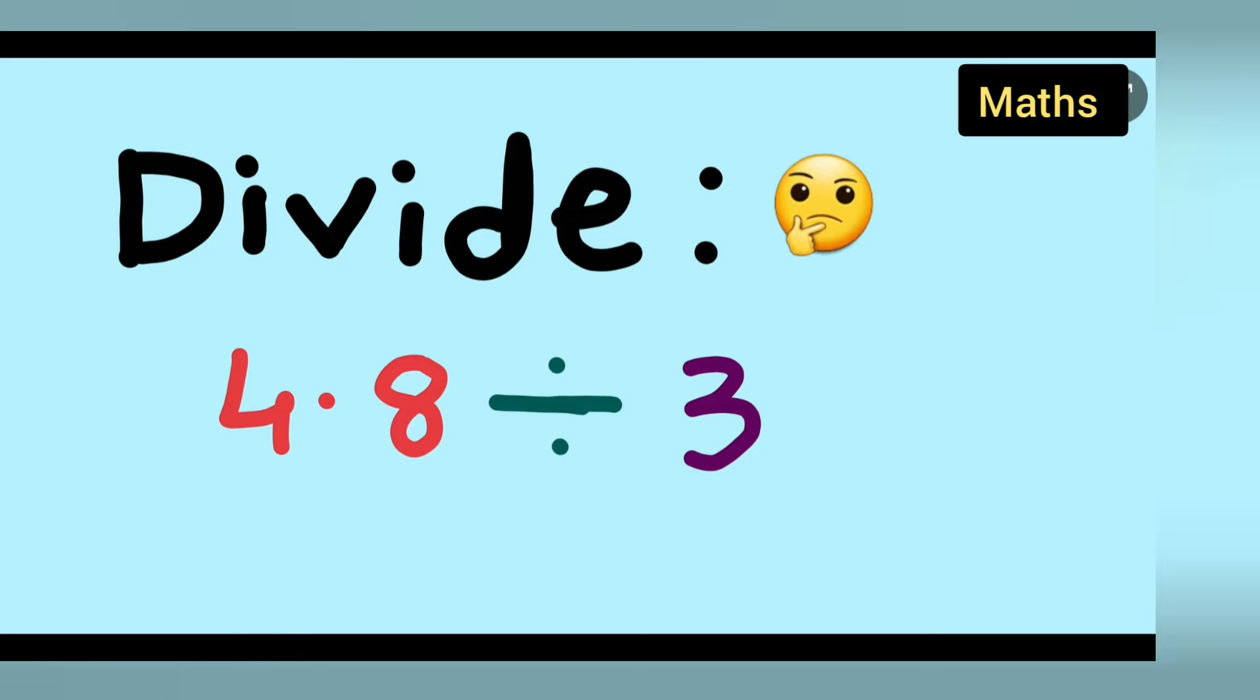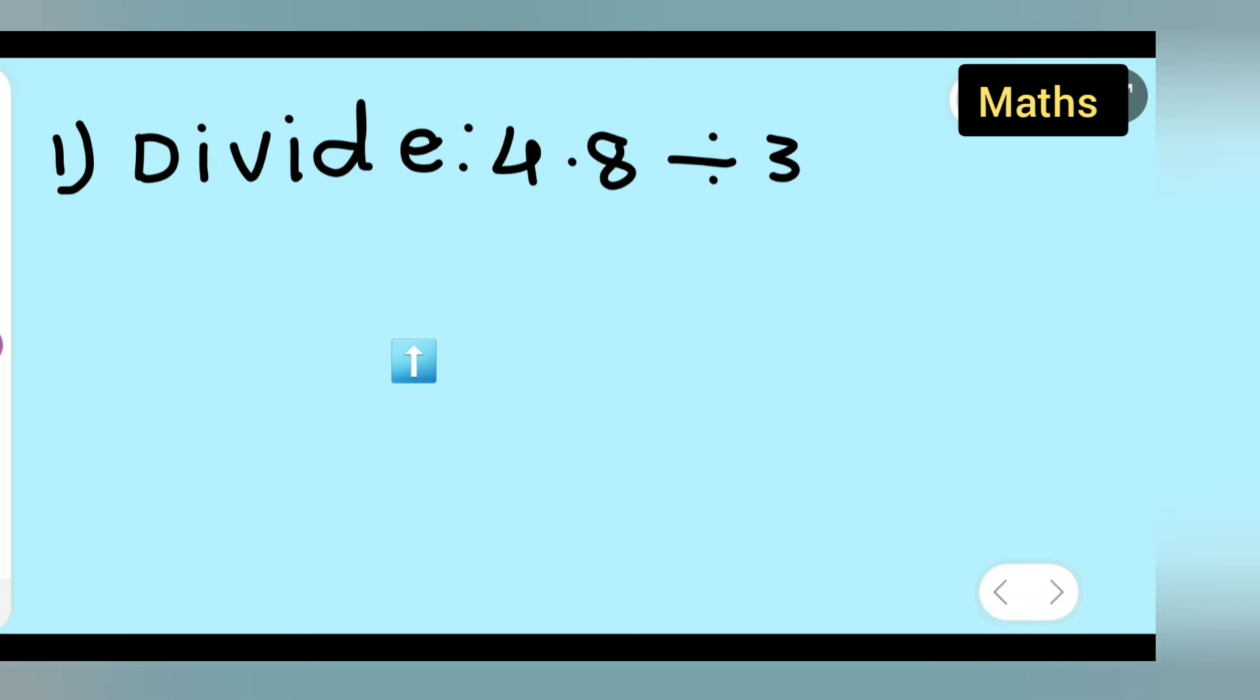Today's math class question is: divide 4.8 by 3. Here, one number has a decimal point and one is without a decimal point. Many of you will find this difficult, right? So let's see how to divide 4.8 by 3.